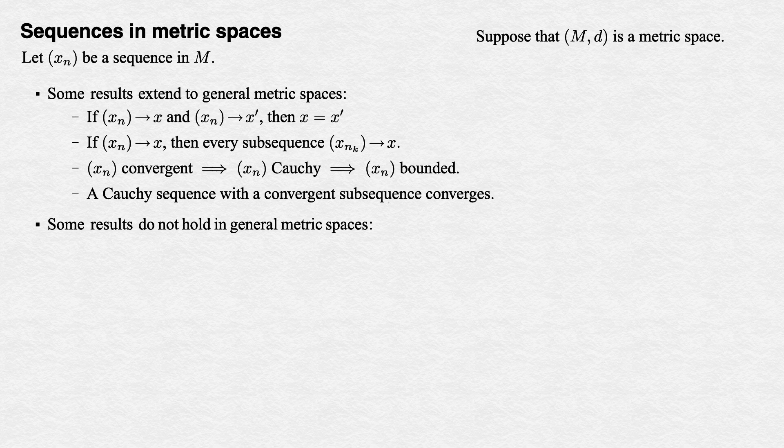Other results do not hold for general metric spaces, the reason being that the real line possesses certain special properties that not all metric spaces have. And if you look at the old proofs, they don't rely solely on arguments about distance.